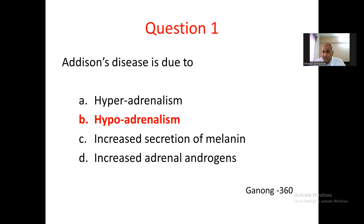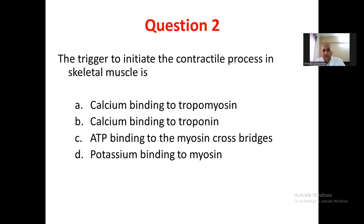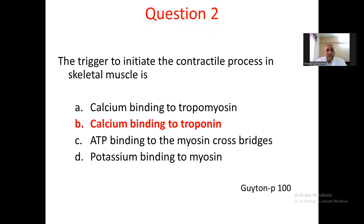I have given references at the bottom of each page, either Ganong or Guyton. I referred to Ganong 2010 edition and Guyton 2021 edition. Question number 2: The trigger to initiate the contractile process in skeletal muscle is — A. calcium binding to tropomyosin, B. calcium binding to troponin, C. ATP binding to the myosin cross bridges, D. potassium binding to myosin. Calcium binding to troponin triggers the excitation-contraction coupling. Hence the answer is calcium binding to troponin, referred to Guyton page 100.